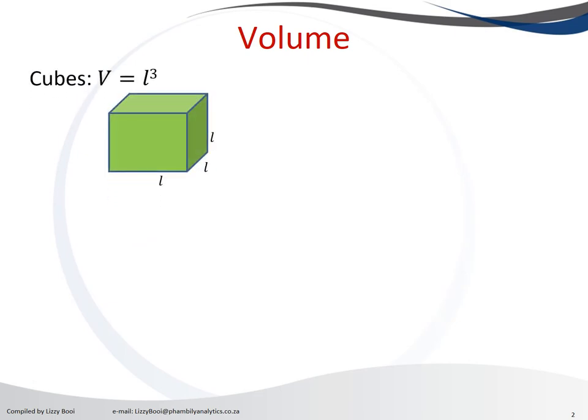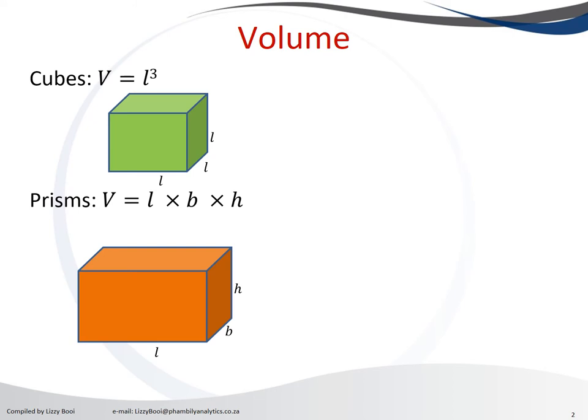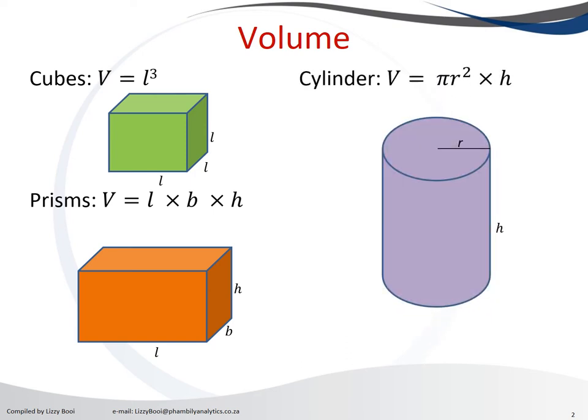Formulas for each. To calculate the volume for a cube, we use L squared. To calculate the volume for a prism, we use the length times the breadth times the height. To calculate the volume of a cylinder, we use the circle which has a radius, so we use the area of a circle formula pi r squared multiplied by the height.